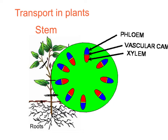The xylem will be carrying water upwards — only ever upwards — being dragged up in the transpiration stream. Meanwhile, the phloem on the outside could be carrying glucose in either direction. During the day it's moving down to be stored as starch, and at night time it's moving up to the top of the plant to provide glucose for respiration until photosynthesis can restart the next day.